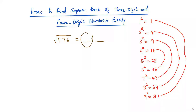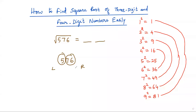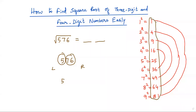To find the first digit of the answer, I split the number 576 into groups by taking two digits from the right. So 76 becomes one group and 5 becomes another group. To get the first digit, I take the number in the first group, which is 5.